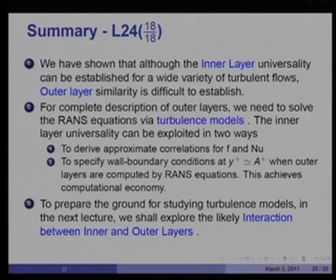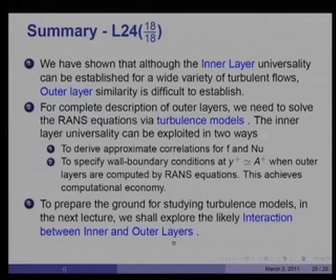In summary, we have shown that inner layer universality can be established for a wide variety of turbulent flows, while outer layer similarity is difficult to establish. The inner layer universality can be exploited in two ways: to derive approximate correlations for friction factor and Nusselt number, and to specify wall boundary conditions at y⁺ = A⁺ when outer layers are computed by RANS equations — achieving computational economy. To prepare the ground for studying turbulence models in the next lecture, we shall explore the likely interaction between inner and outer layers.